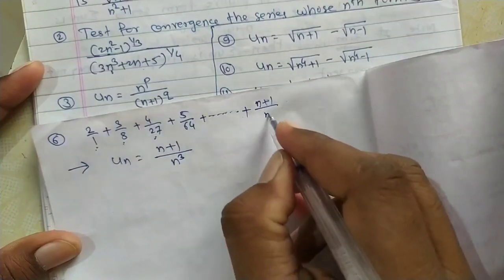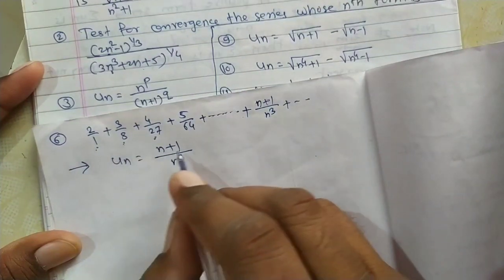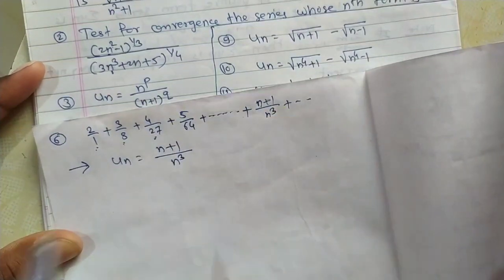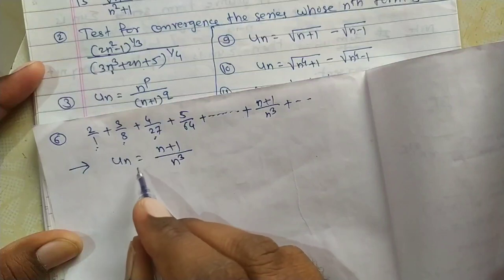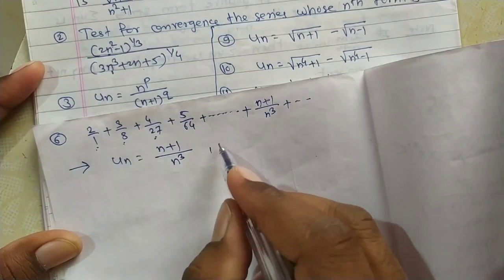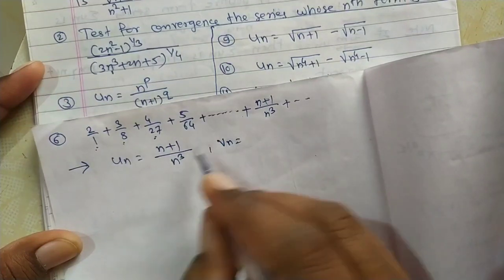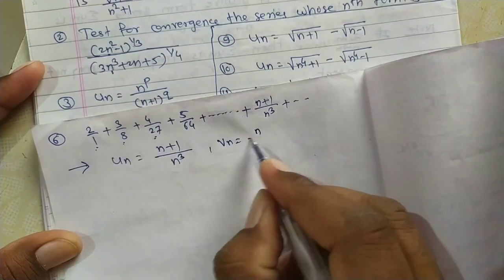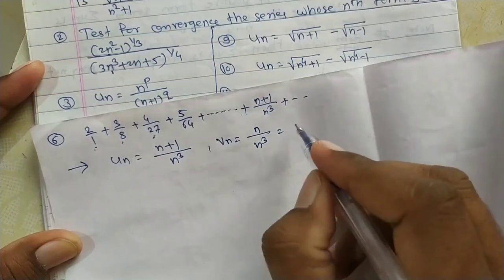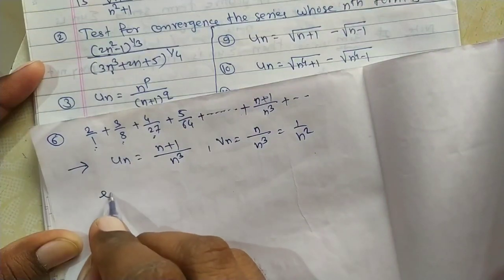Sometimes the nth term is directly given in a problem as (n+1)/n³; if not, we find it as shown. Now we apply the comparison test. From un = (n+1)/n³, we take vn by taking n common from numerator and n³ from denominator, giving vn = n/n³ = 1/n².